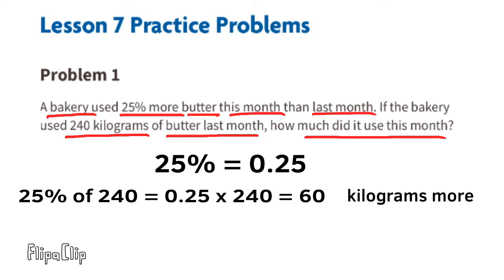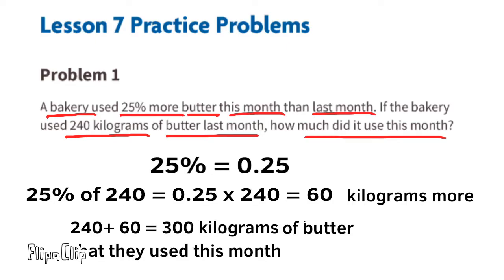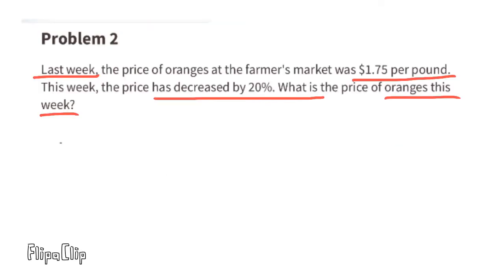So if they used 60 kilograms more butter this month, we need to add 60 kilograms to 240 kilograms, and that equals 300 kilograms. This month they used 300 kilograms of butter. Problem number two: